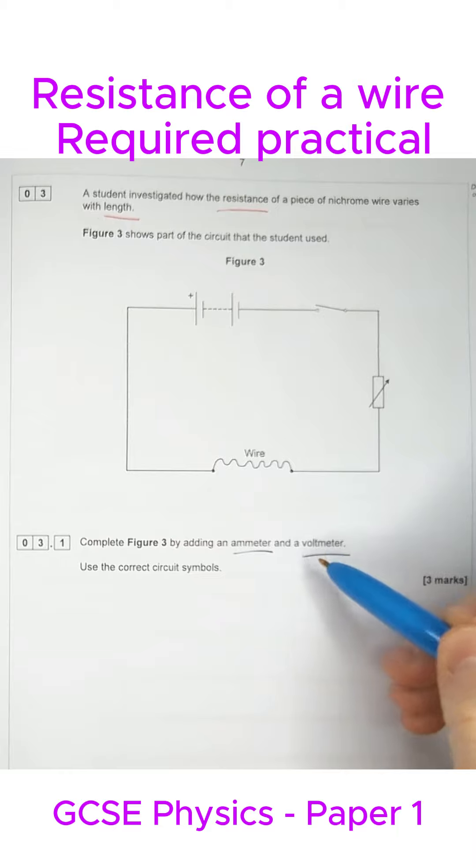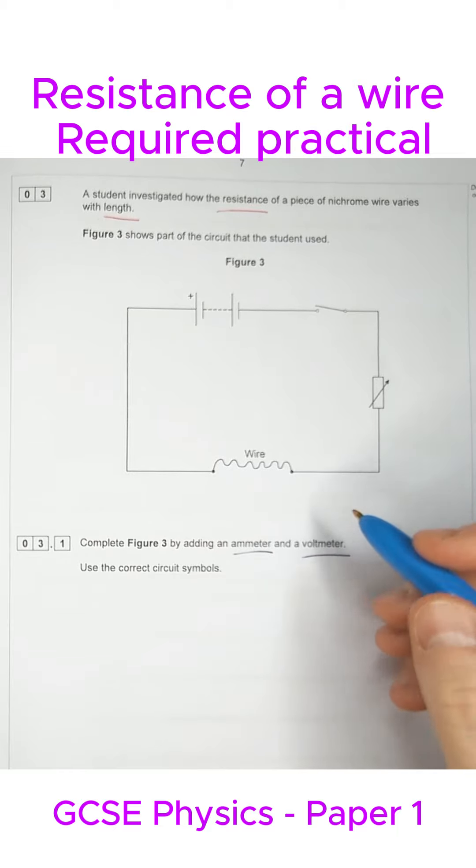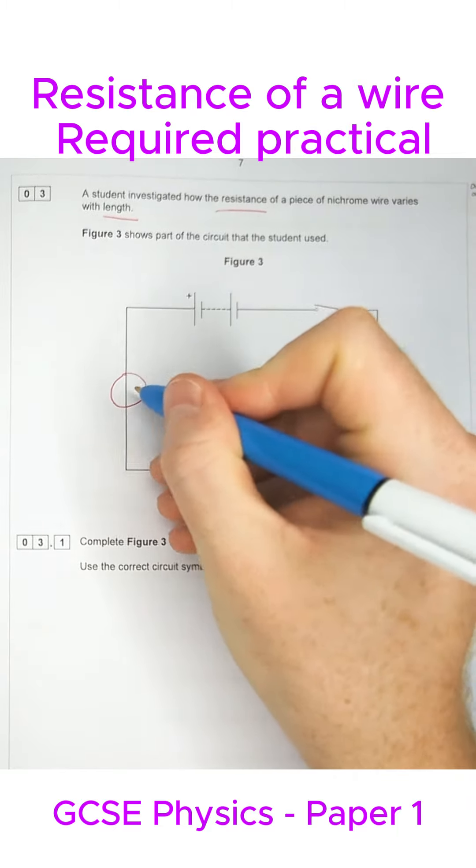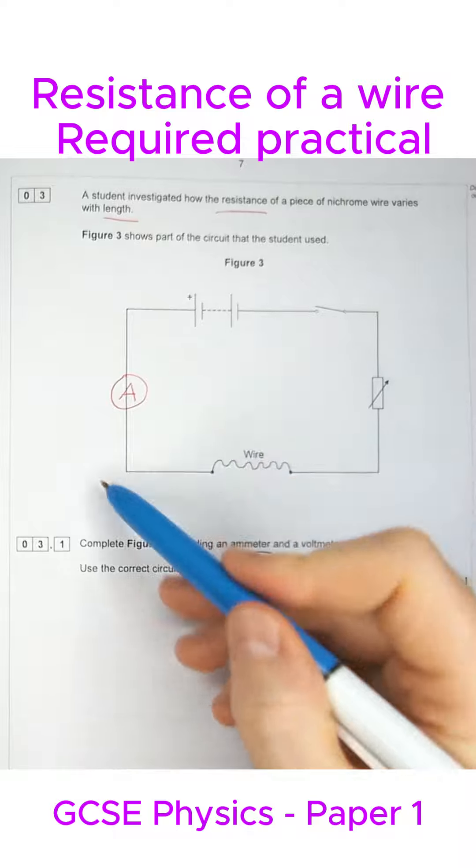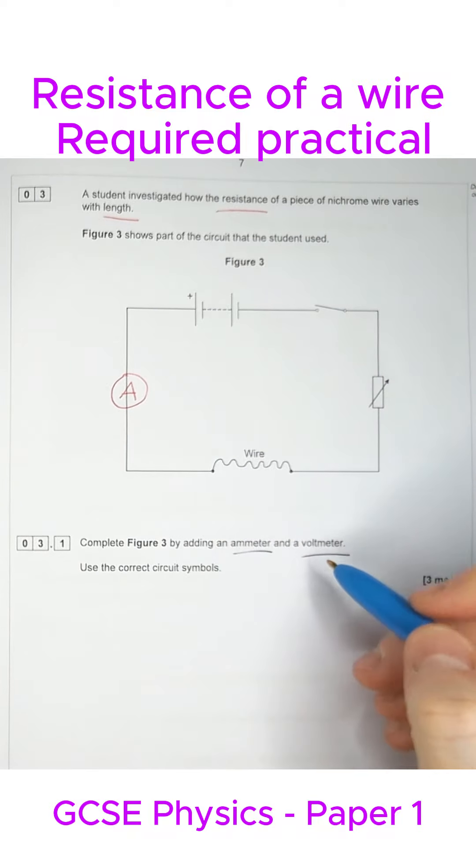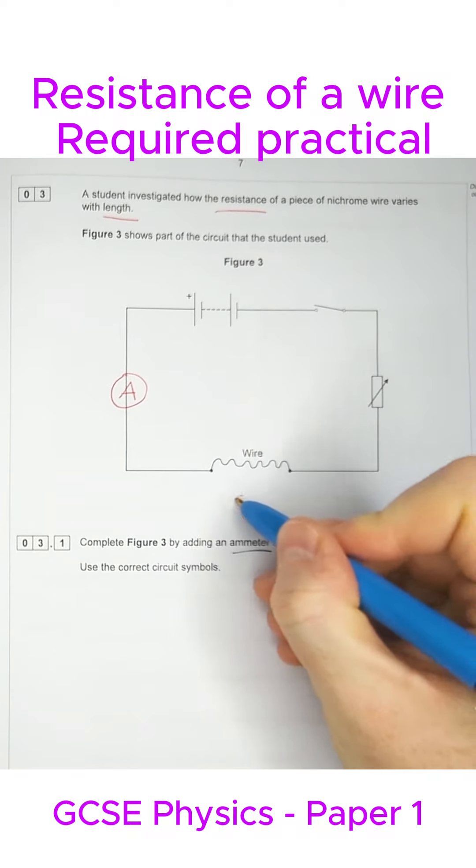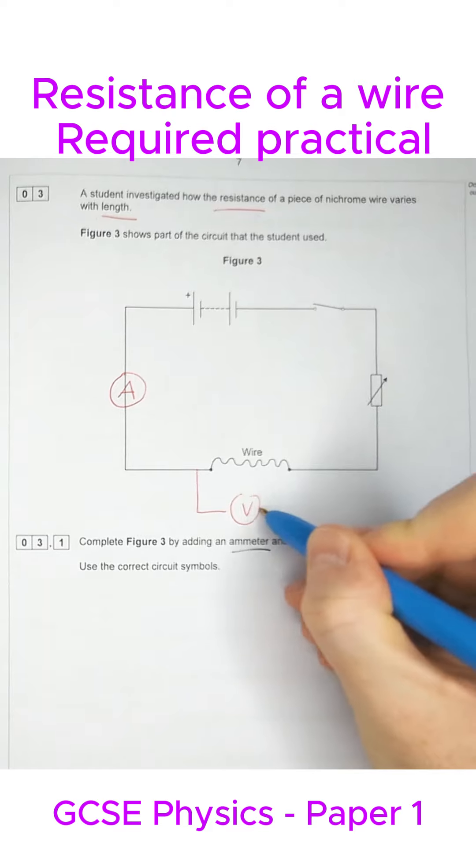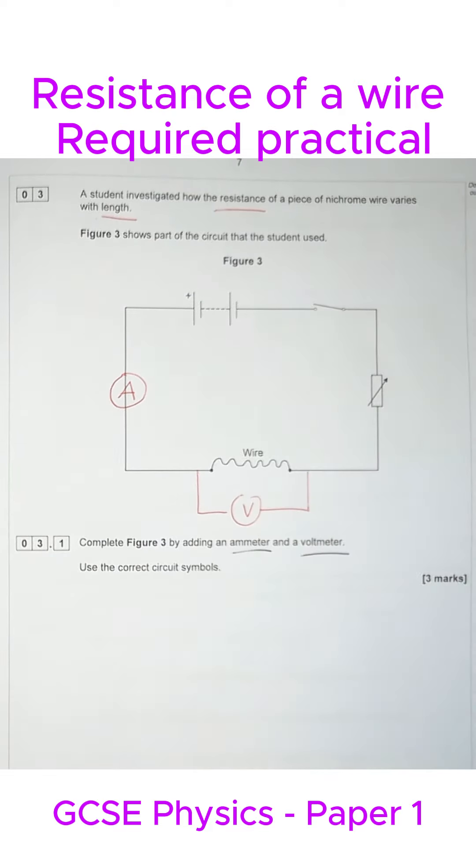First of all, we need to look at where we place our ammeter and our voltmeter. Now our ammeter can go anywhere in the circuit because ammeters measure current and current is the same anywhere in this circuit. The voltmeter, symbol V, has to be connected in parallel. So that goes across the wire because that's what we're investigating.